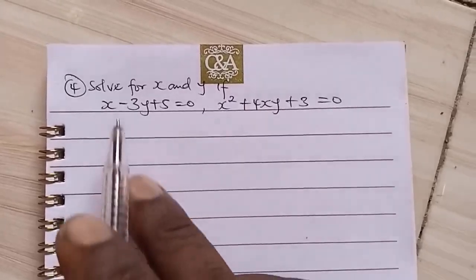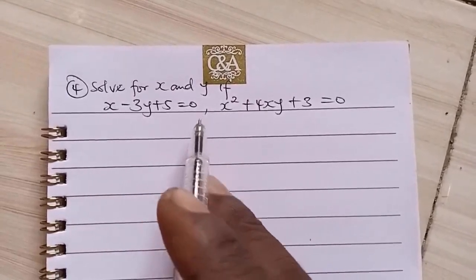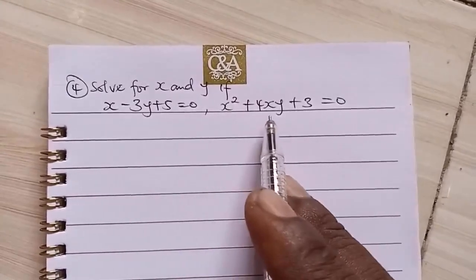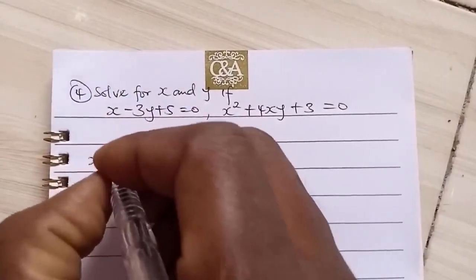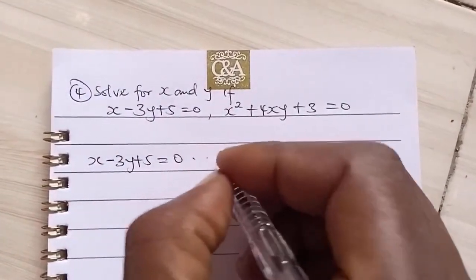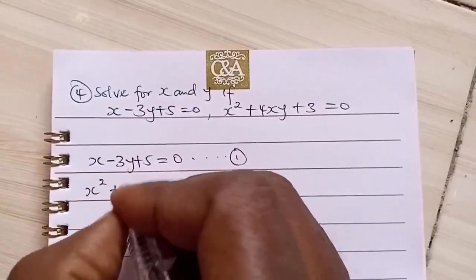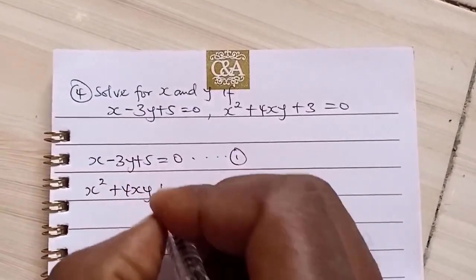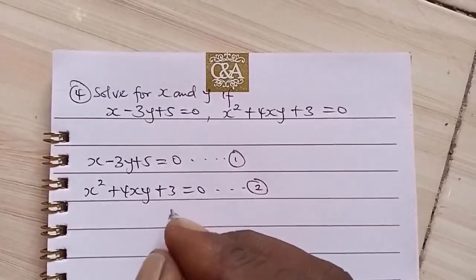The next question says, solve for X and Y. If X minus 3Y plus 5 equals 0, and X squared plus 4XY plus 3 equals 0. Now for us to solve this, we first of all say X minus 3Y plus 5 equals 0, we call it equation 1. Then the second one, X squared plus 4XY plus 3 equals 0, we call this equation 2.